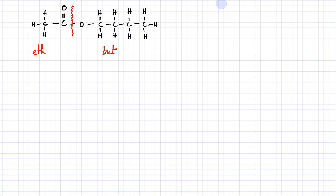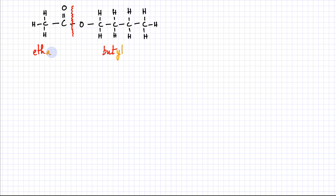This is the single bond O side, so this side which is attached to the single oxygen is going to end with '-yl,' making it 'butyl.' The side which has the C double bond O in it is going to end with '-oate,' so it's going to become 'ethanoate.' The final name of this molecule is butyl ethanoate.